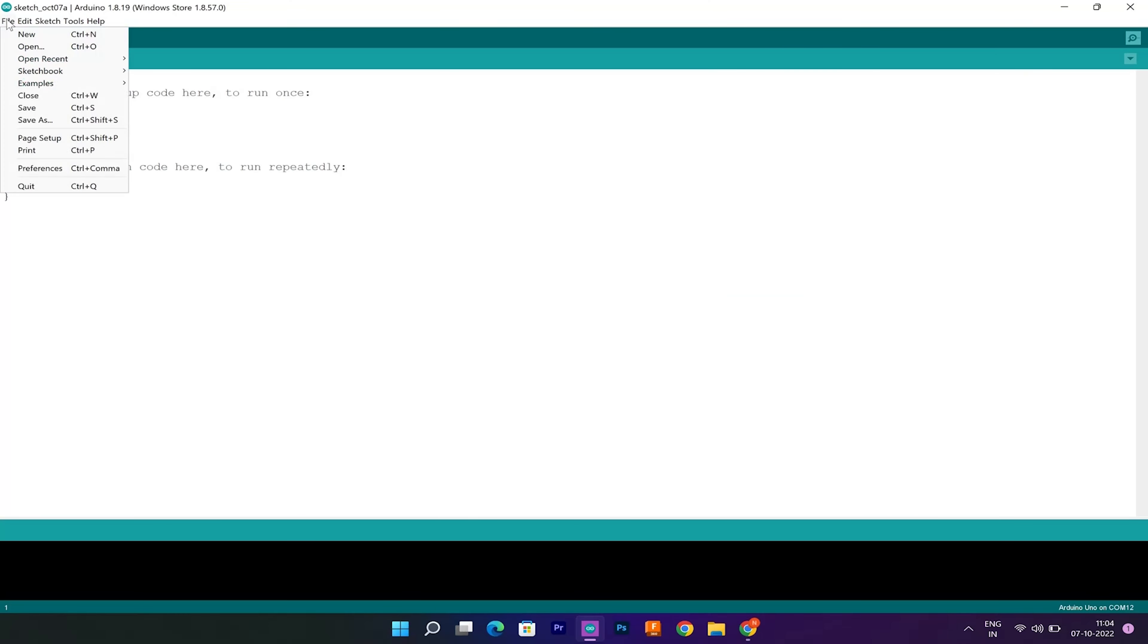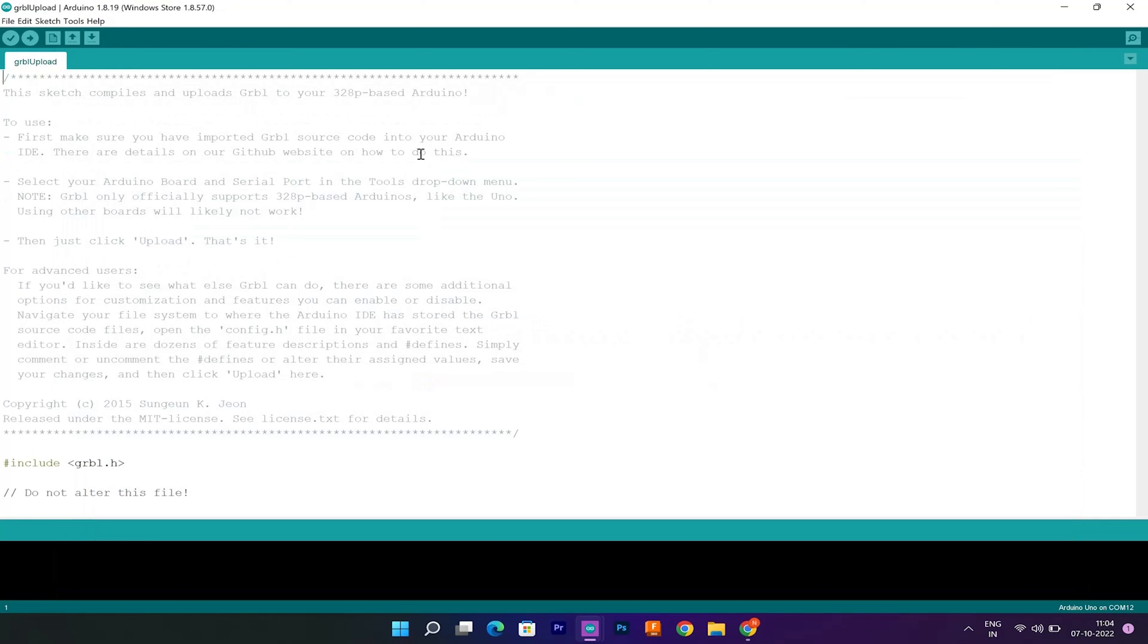On the programming side, we only need to upload the GRBL firmware. To do so, download the GRBL zip file which is given in the description and add this library as zip to Arduino IDE. And we have already done it. Once we installed the GRBL firmware, now our Arduino knows how to read G-code and how to control the CNC machine according to it.